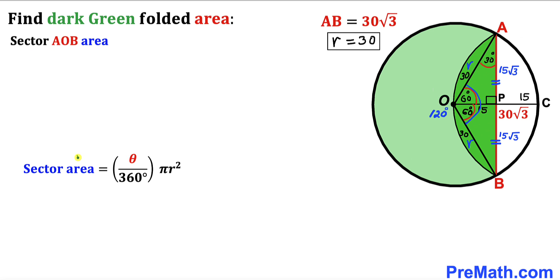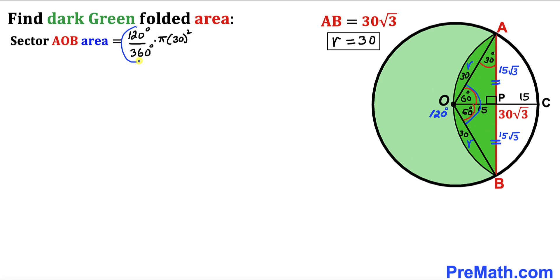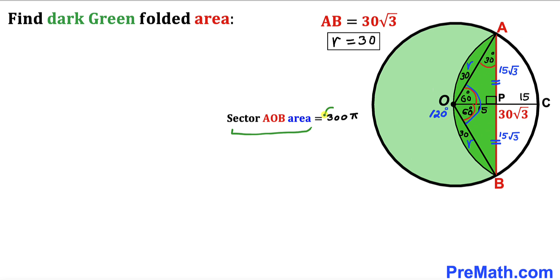Let's calculate the area of sector AOB. Using the sector area formula: Area = (θ/360) × πr². With θ = 120° and r = 30, the sector AOB area = (120/360) × π × 30² = (1/3) × 900π = 300π square units.